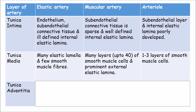Regarding the tunica media: in the elastic artery, many elastic laminae and few smooth muscle fibres are present. In the muscular artery, it consists of many layers of smooth muscle cells and a prominent external elastic lamina. In the arteriole, it consists of only one to three layers of smooth muscle cells.